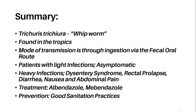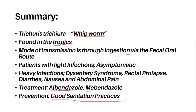To summarize, trituriasis is also known as the whipworm. It is found in the tropics or places with fairly warm climates. Its mode of transmission is through ingestion via the fecal-oral route, with the eggs embryonating and becoming infective in the soil. Patients with light infections may remain asymptomatic, while those with heavy infections may have more serious symptoms. It is treated with albendazole and mebendazole, and is prevented with good sanitation practices.